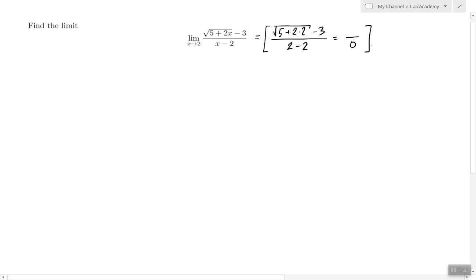That means the function is discontinuous at this point, but we know there are many different types of discontinuities, so it's all about what happens in the numerator. In the numerator we also get 0 because square root of 9 is 3 and 3 minus 3 is 0.